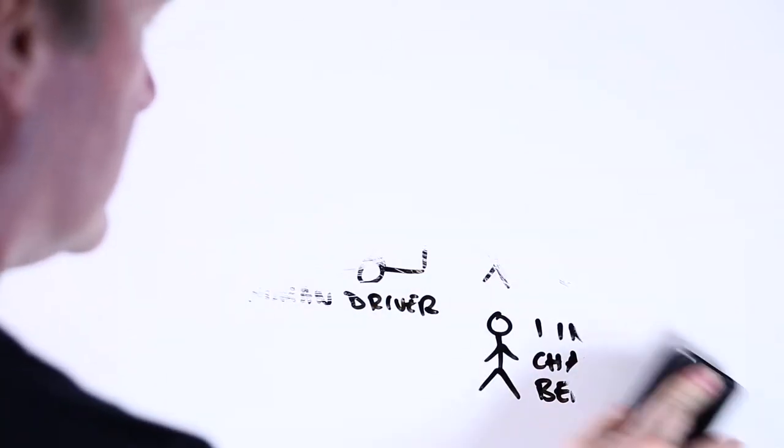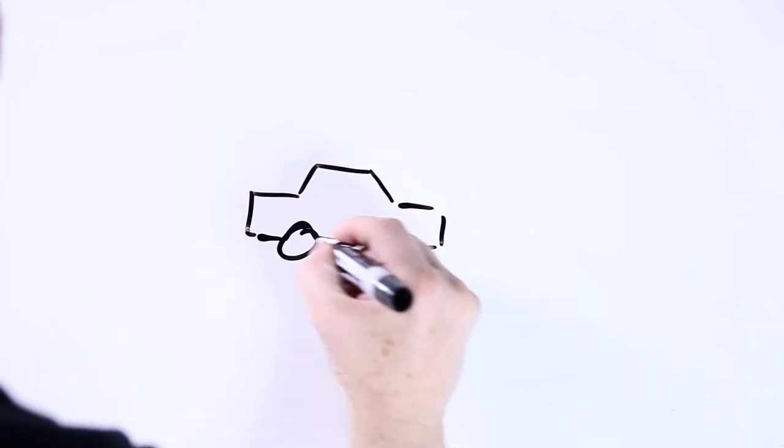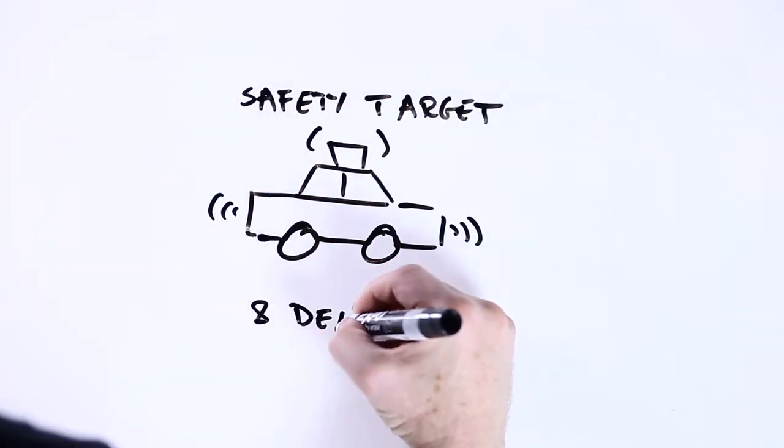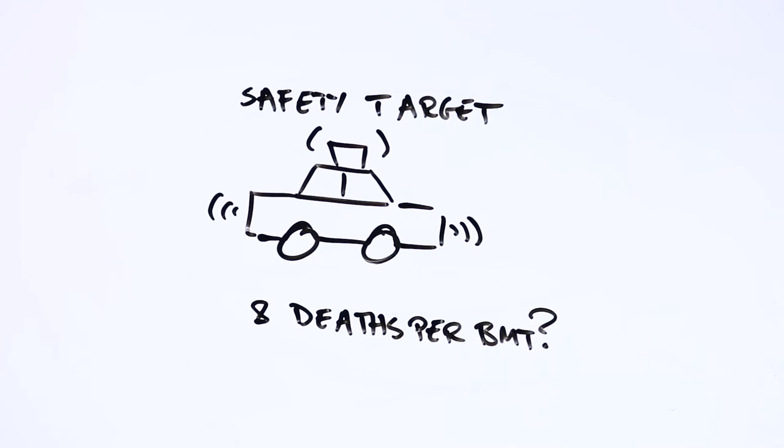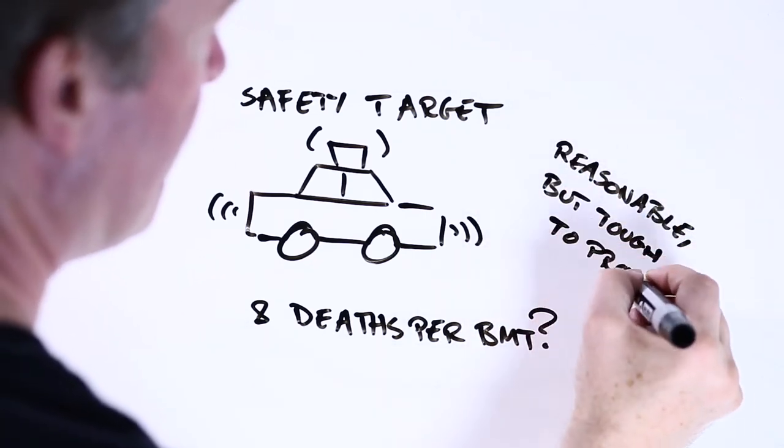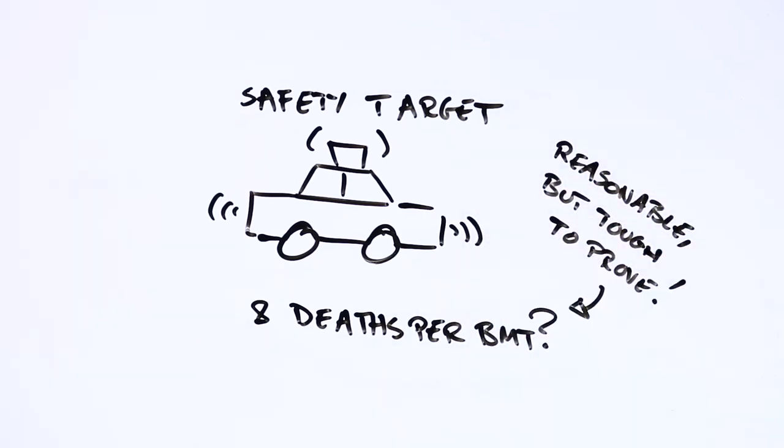Maybe this should be the benchmark for self-driving cars, or maybe a slightly lower number, say, eight deaths per billion miles travelled. This sounds like a reasonable target. The only problem is, it's not that easy to prove if and when it's been reached.